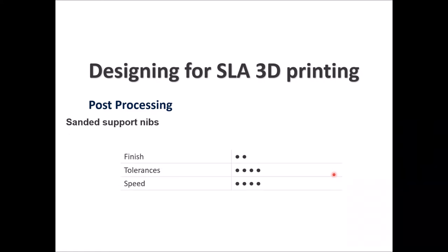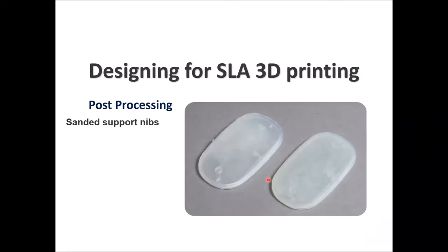An overview of sanded support nips post-processing: finish is 2 out of 5, tolerances are 4 out of 5, and speed is 4 out of 5. Depending on your application, some people will consider this an acceptable post-processed part, while others may require higher quality.